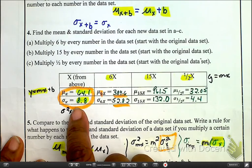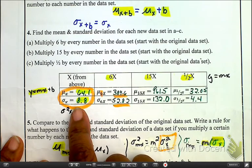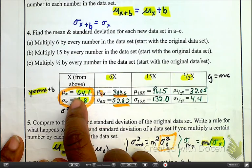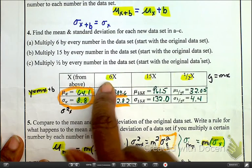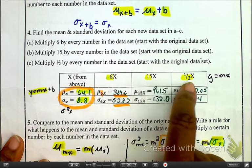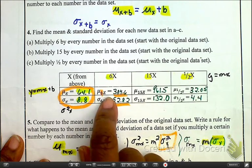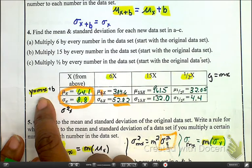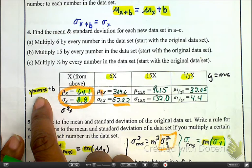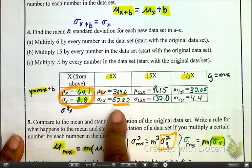My new mean value is going to be whatever the multiplier is, which in this case, 6, 15, and 1 half. Okay, the new mean value will be affected by a multiple of whatever the slope is, and so will the standard deviation.